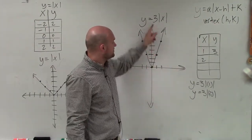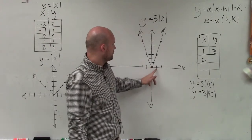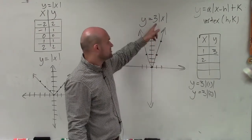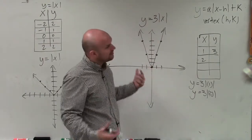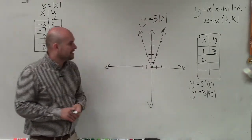So it's always over 1 up 1. But since I'm multiplying by 3, I go over 1 up 3. If this was like 1 half, then I'd go over 1 up 1 half. All right? So just a key little tip that can help you out with that.